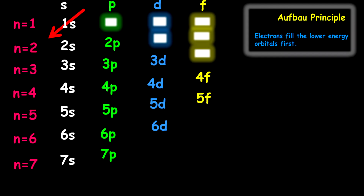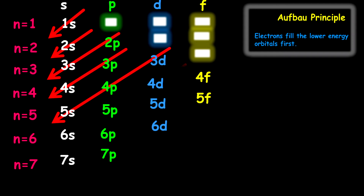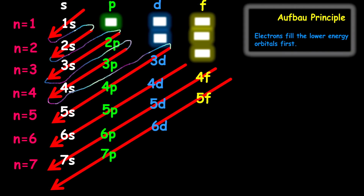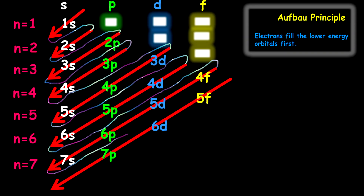If you notice the pattern, we go diagonal. So the order of filling is: 1S fills first, then 2S, then 2P, then 3S, then 3P, then 4S — and we continue along the path of the arrow head to tail. Following this pattern, you'll be able to write all the possible electron configurations for any element within the periodic table.